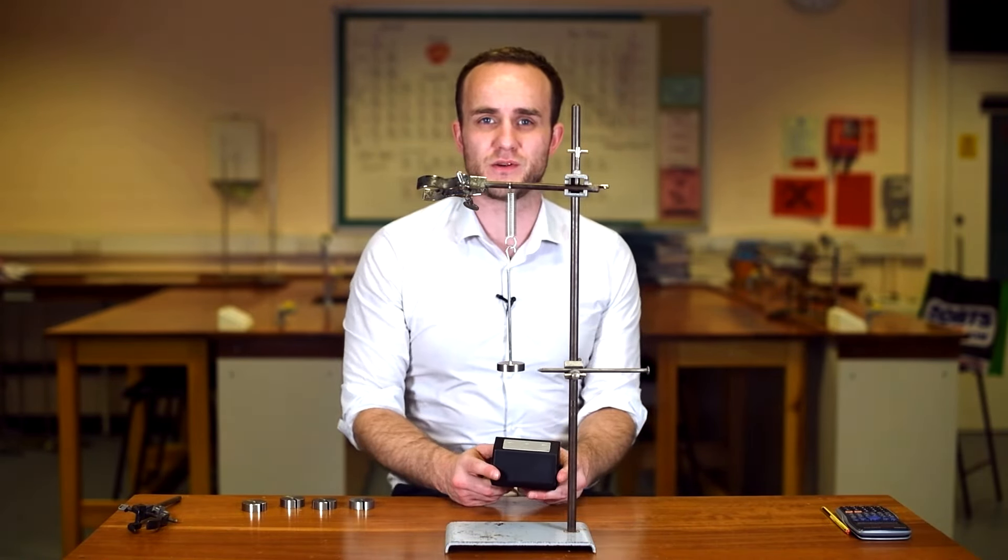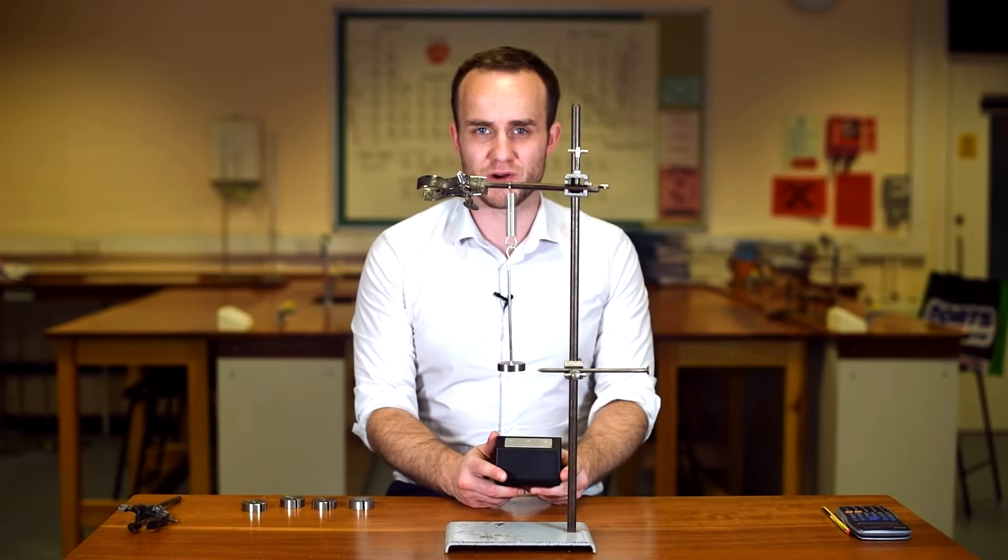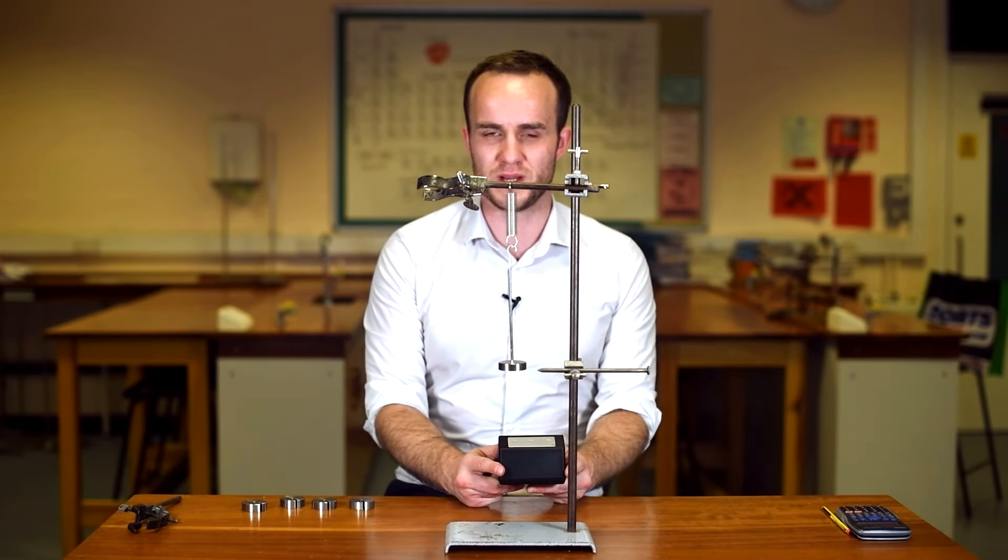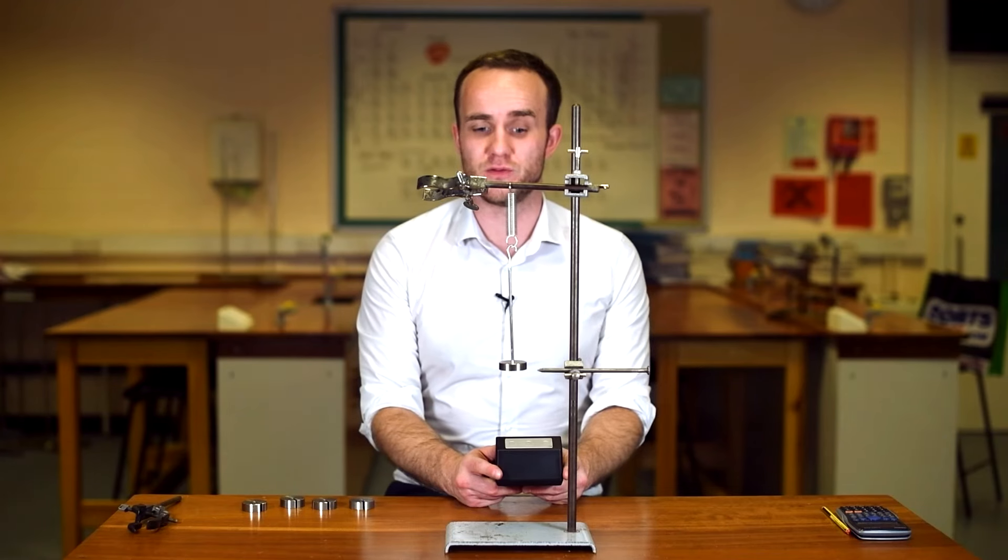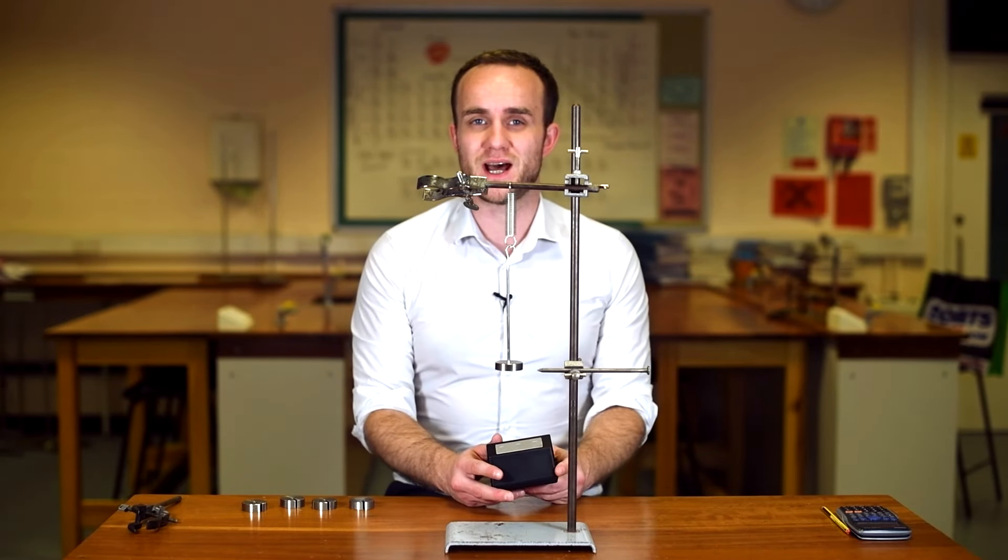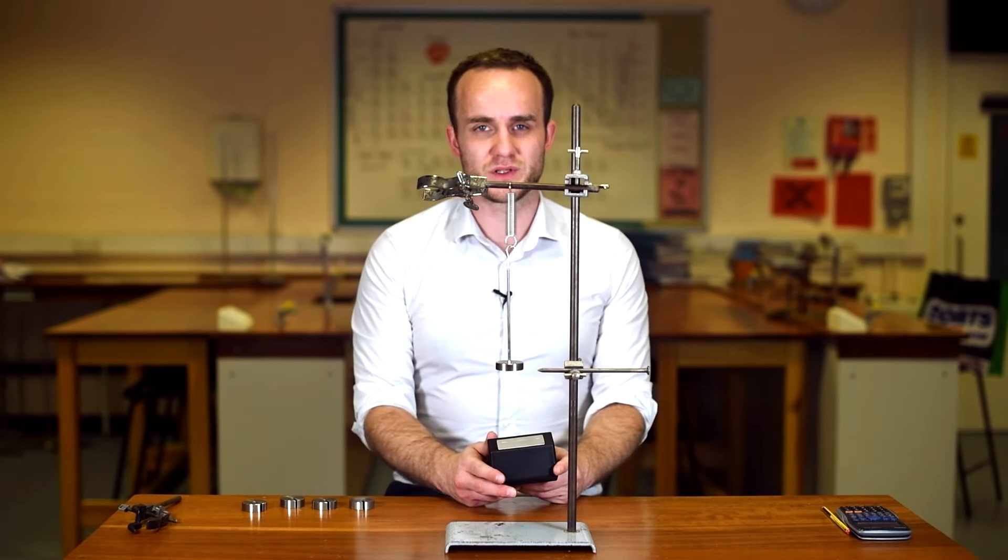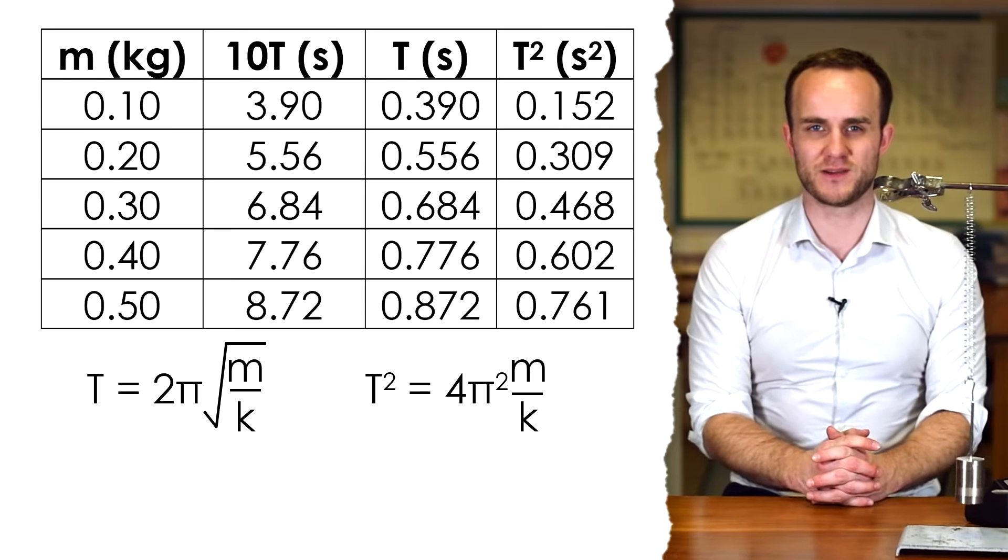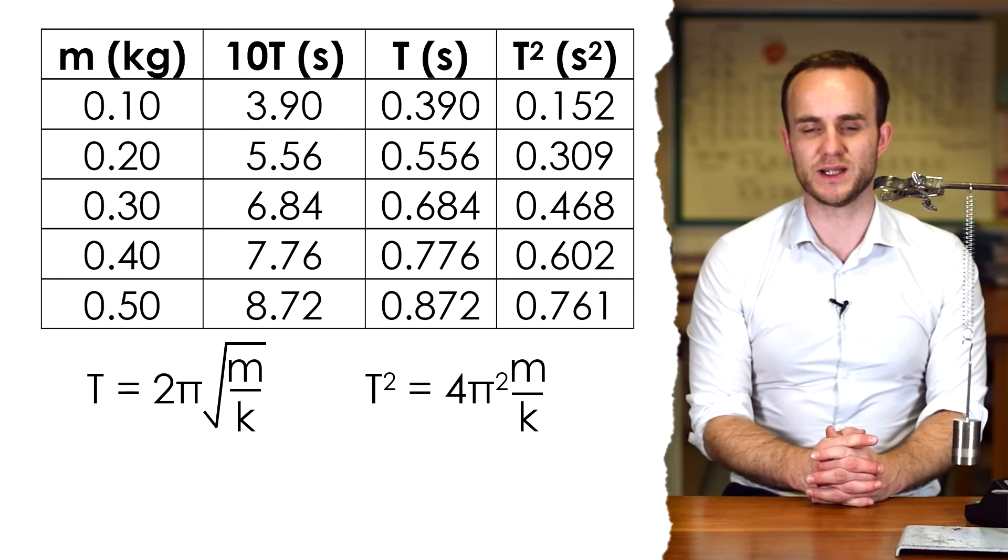So that was 3.90 seconds. Divided by 10, that's 0.390 seconds. That's my time period for one oscillation for 100 grams. Then I'm going to add more mass on and see what the time period is again. Now that I've done 500 grams, or 0.5 kilograms, because they do need to be working in kilograms.